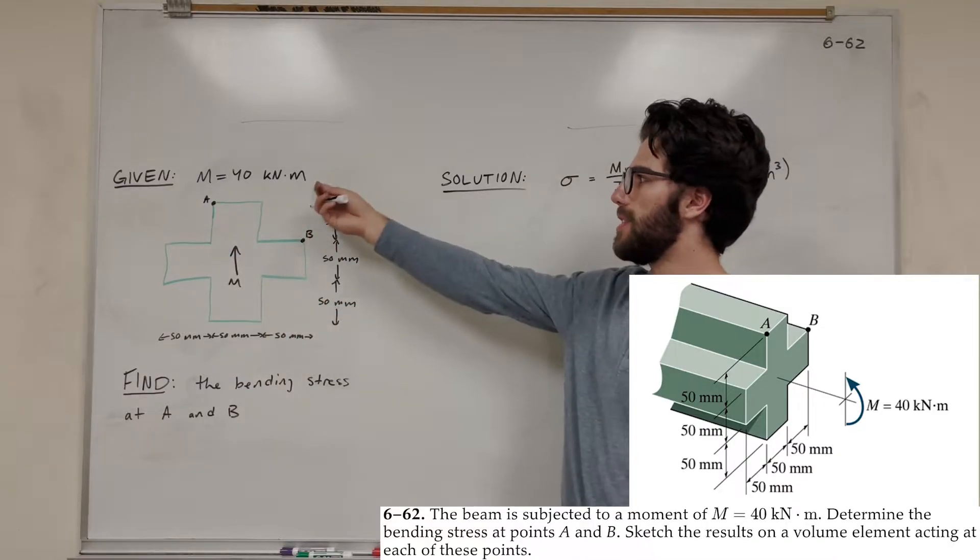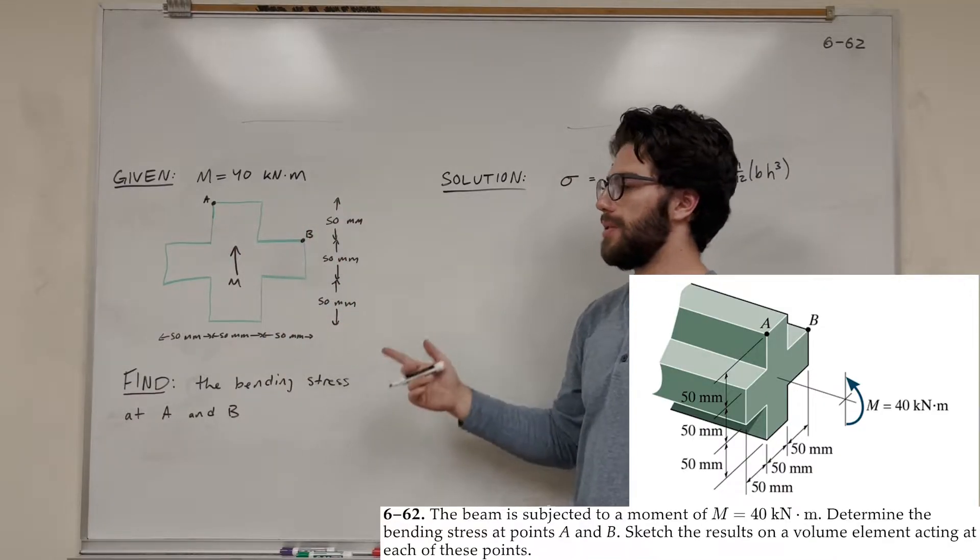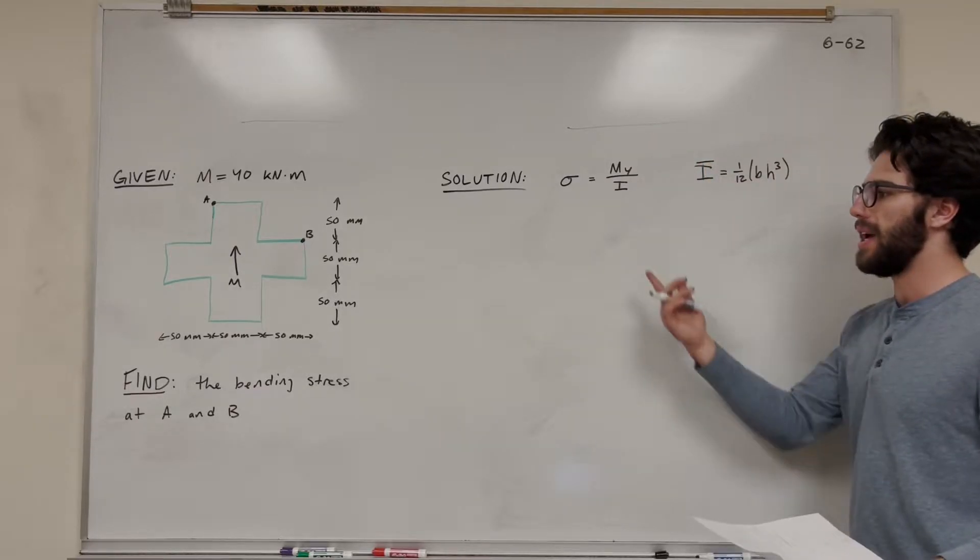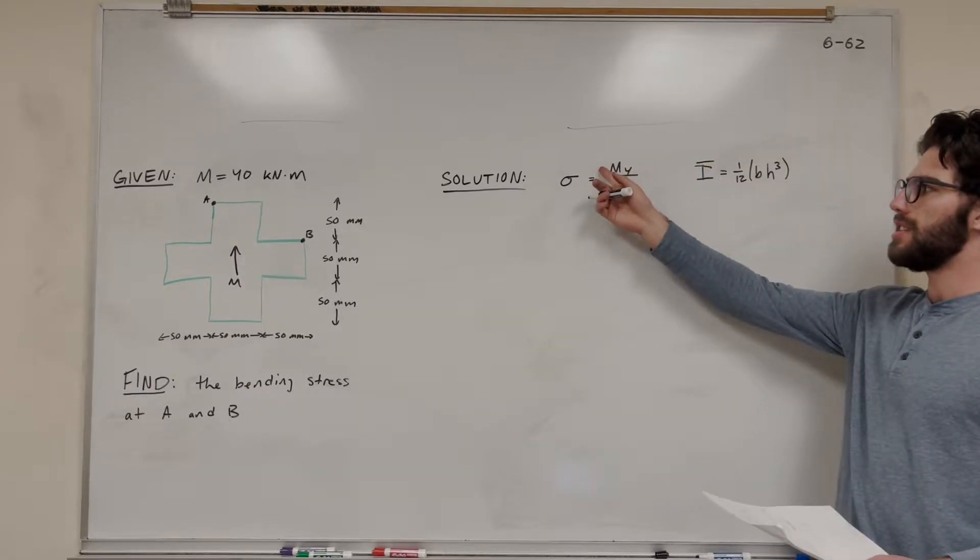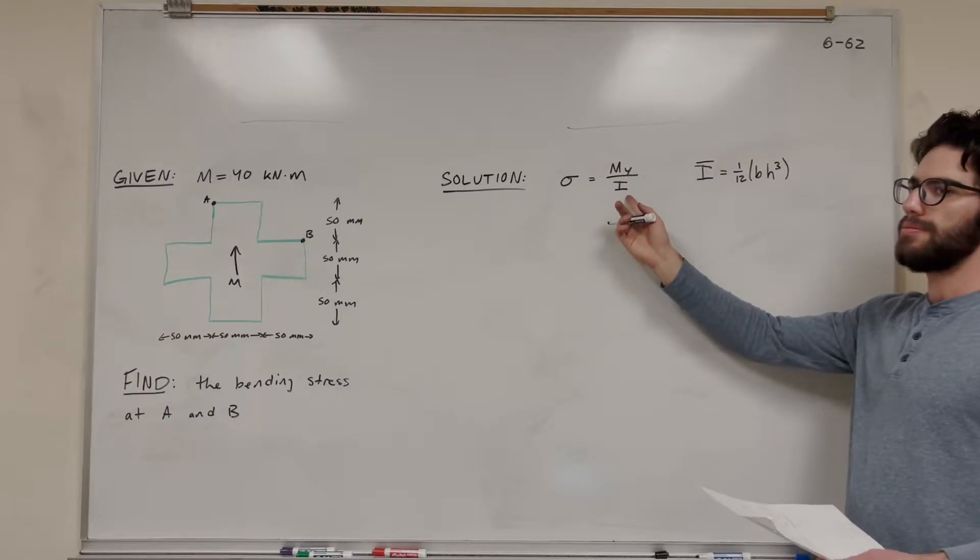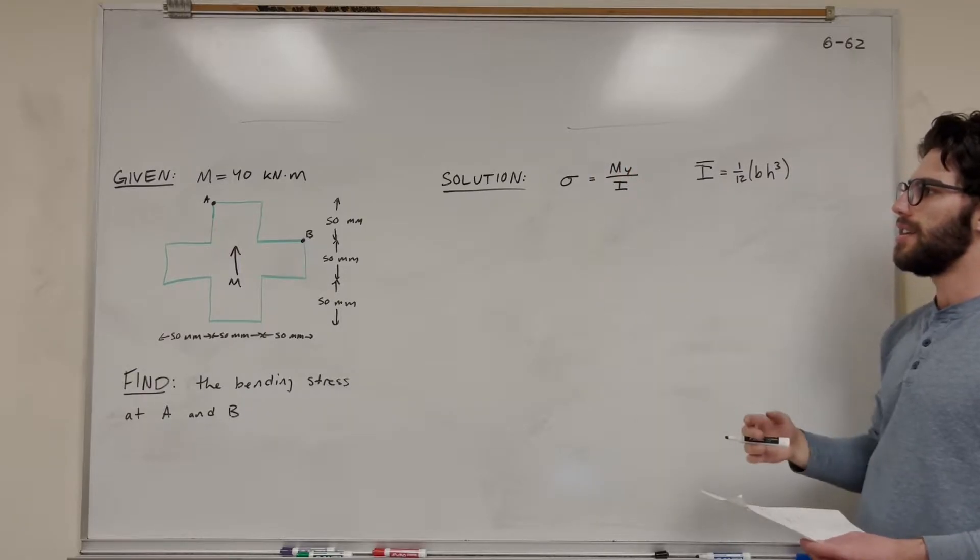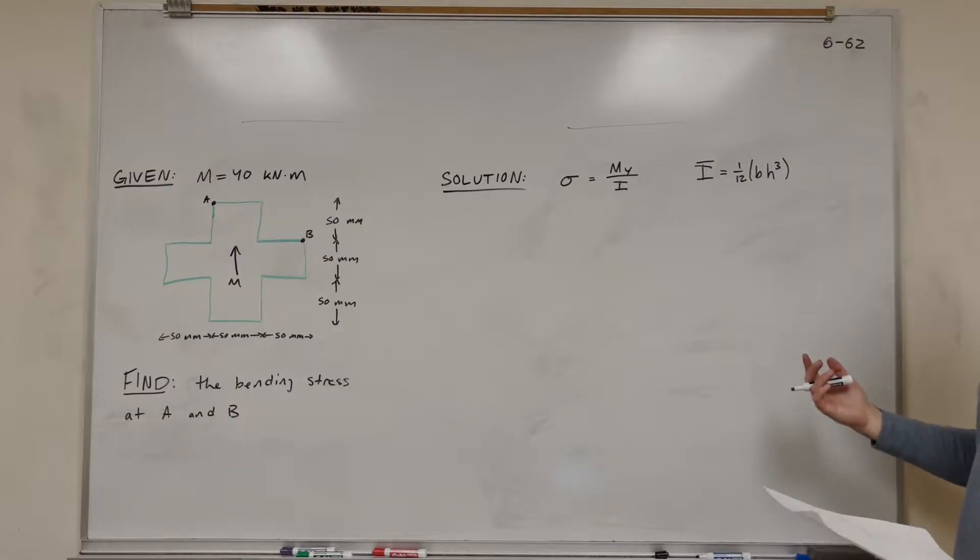We're given that the moment is equal to 40 kilonewton meters, so we have this cross-shaped thing. And the equation we're going to be using for bending stress is moment times distance over moment of inertia. So let's go ahead and get started with that.